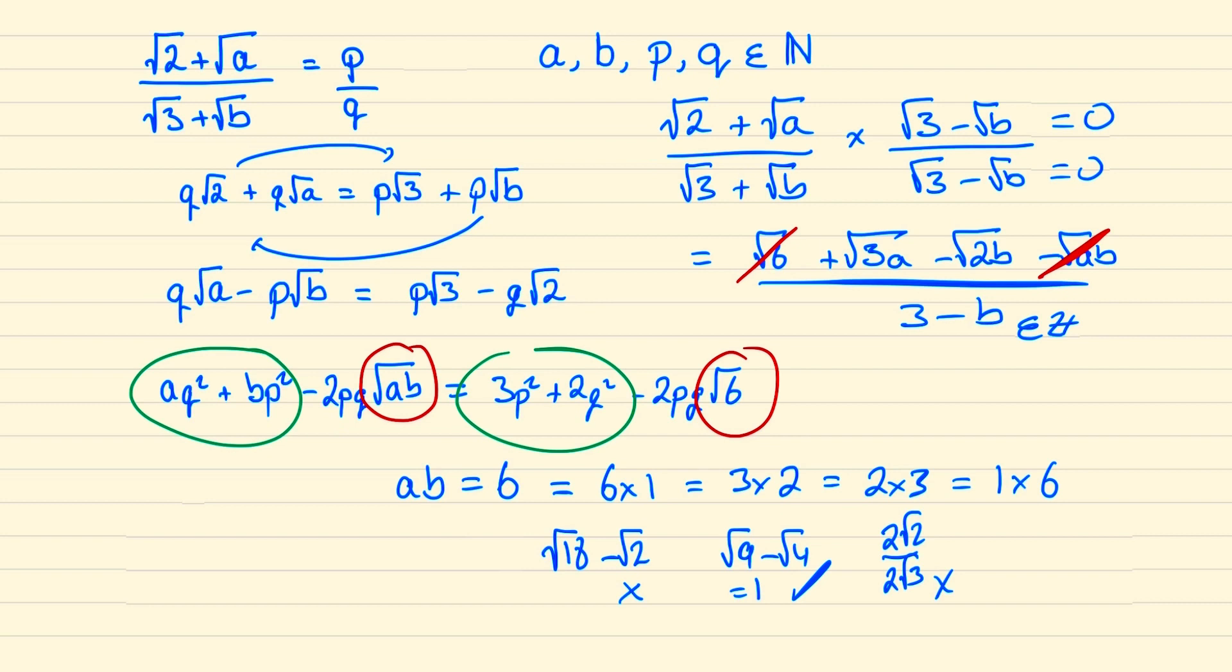And in our final case this will be root 3 minus root 12 which is also irrational. And so the only possibility for a rational solution will be when a is equal to 3, b is equal to 2 and this expression will equal 1. And so we're done.